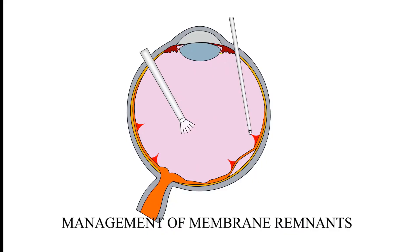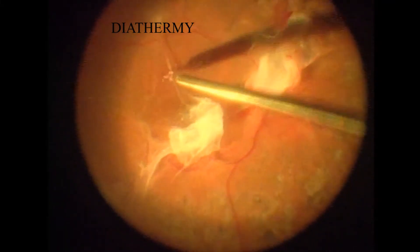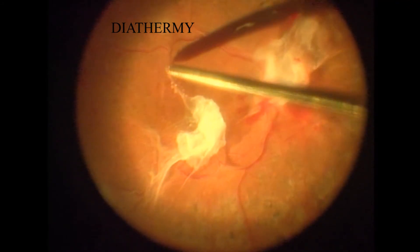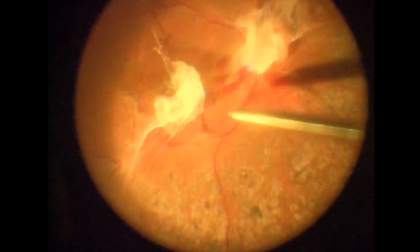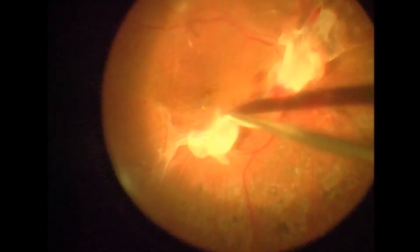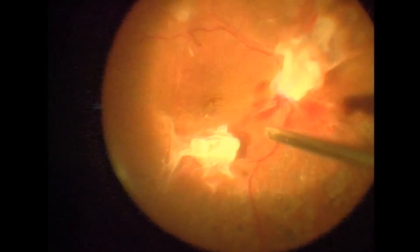When segmenting membranes, it is not necessary to remove the membranes completely, thus leaving small circumscribed remnants centered on the neovascular pecs. This video demonstrates the diathermy to the bleeding edges and trimming of the remnants after segmentation.